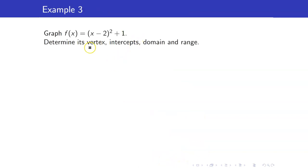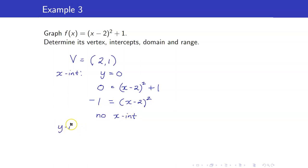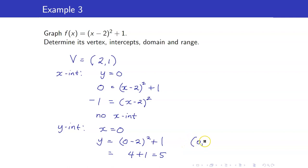Here is an example of a function written in vertex form. Since it is in vertex form, the vertex is (2, 1) — no need to compute negative b over 2a. For the x-intercept, set y to 0: 0 equals (x minus 2) squared plus 1. This gives negative 1 equals (x minus 2) squared, but the square of a number cannot equal a negative number, so there is no x-intercept. For the y-intercept, set x to 0: y equals (0 minus 2) squared plus 1 equals 4 plus 1 equals 5. So the y-intercept is (0, 5).